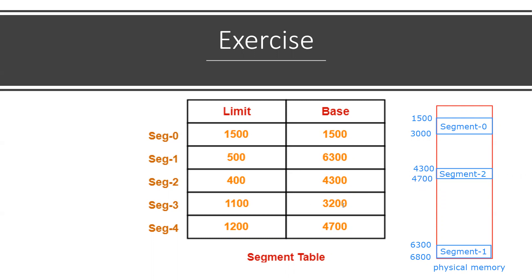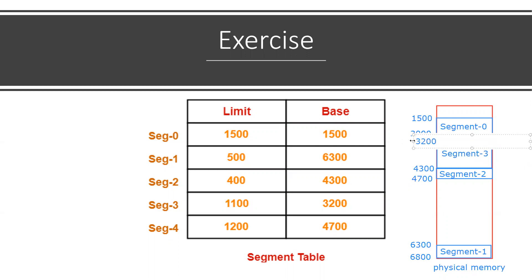After segment 2, segment 3 is at 3200 and requires 1100. So starting address is 3200, and 3200 plus 1100 is 4300. So the ending address is 4300.